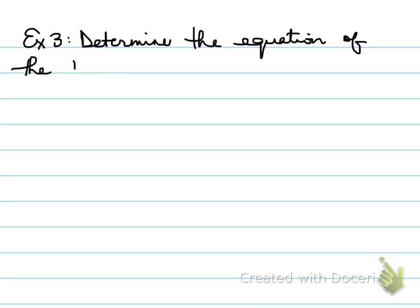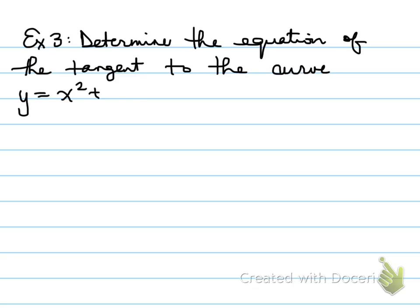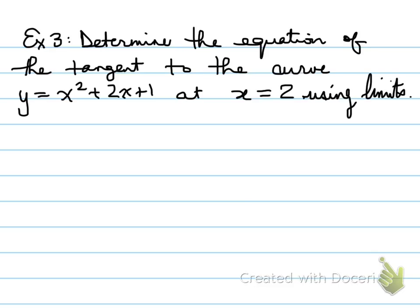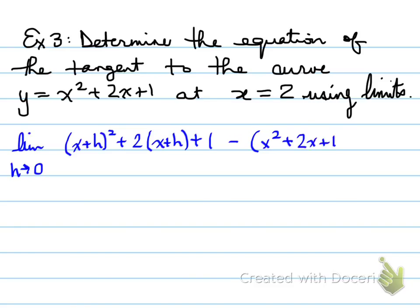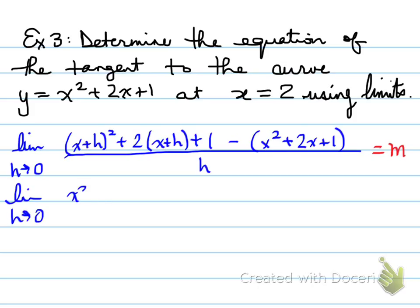Example number 3: determine the equation of the tangent to the curve y = x² + 2x + 1 at x = 2 using limits. We'll find the general equation of the slope first. That's the limit as h approaches 0 of [(x+h)² + 2(x+h) + 1 − (x² + 2x + 1)] all over h.